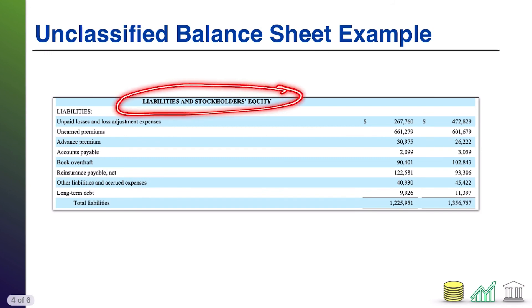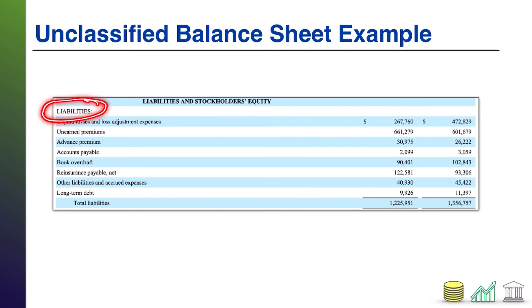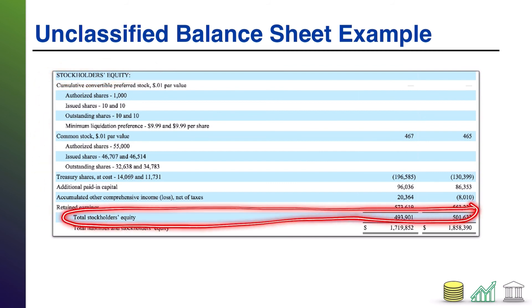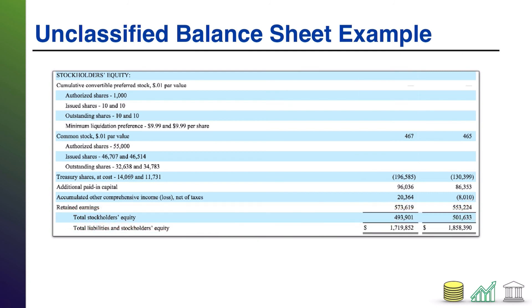Next up, they have a liabilities and stockholders' equity header, but then it is broken up. There's a liability section and they do subtotal their liability section. And then there's their shareholders' equity section with all the shareholders' equity accounts, and they do subtotal their shareholders' equity section. But then notice, even in spite of subtotaling them individually, they do a total L plus SE at the bottom, and those numbers should match to total assets. This is just the general layout you will see for any unclassified balance sheet — assets subtotal, liabilities, shareholders' equity, maybe subtotal individually, but definitely subtotal together to compare to assets, and you're done.